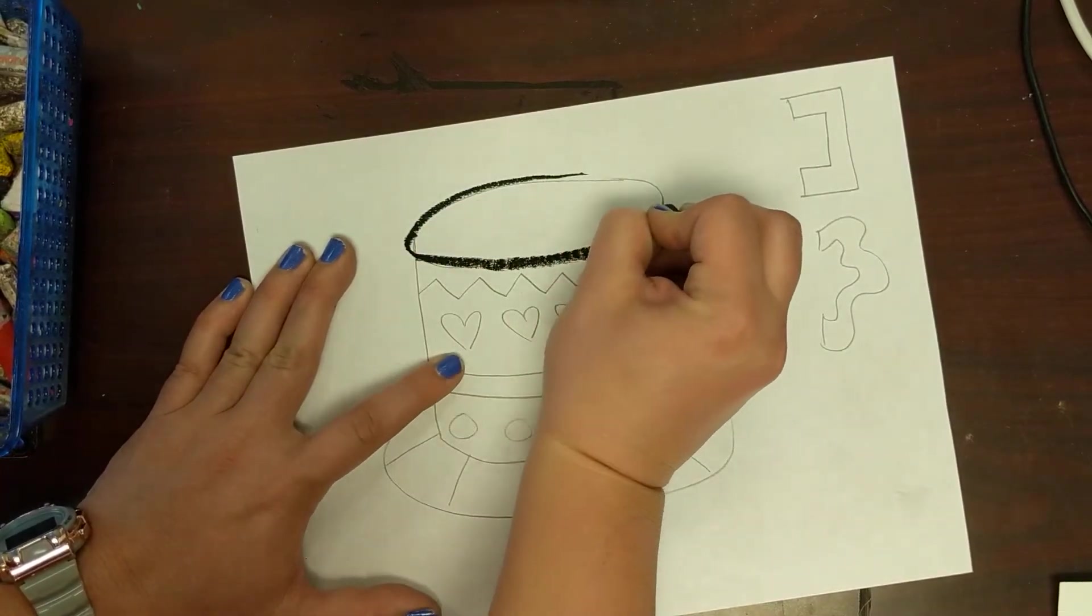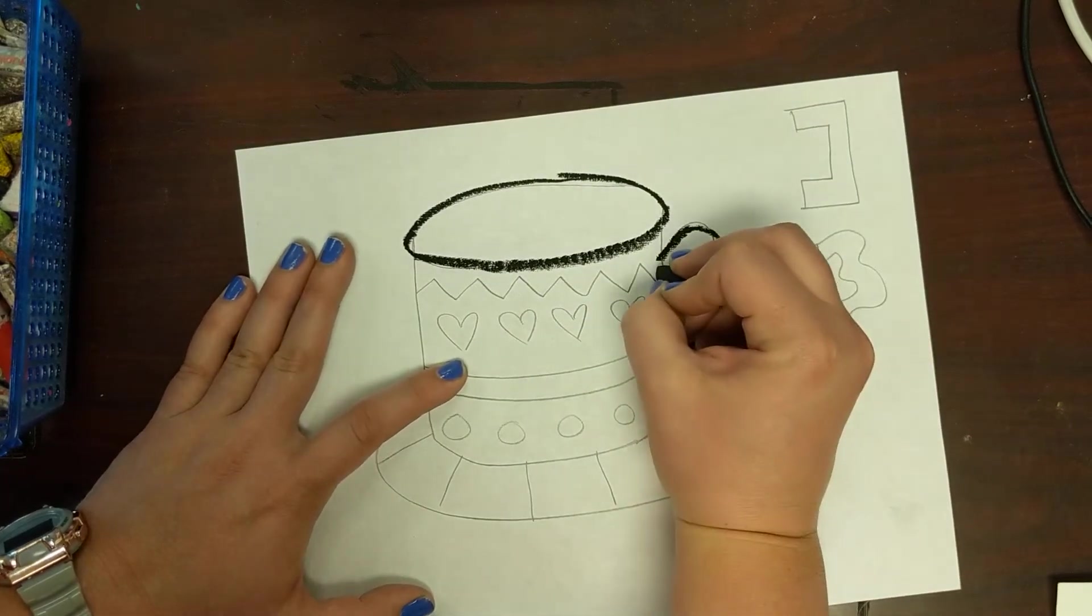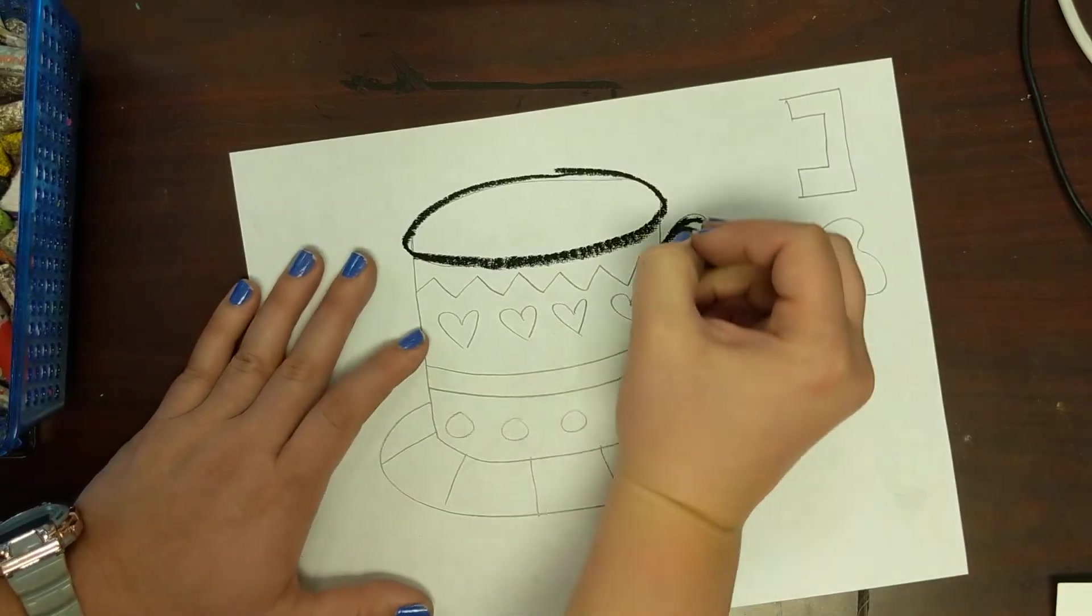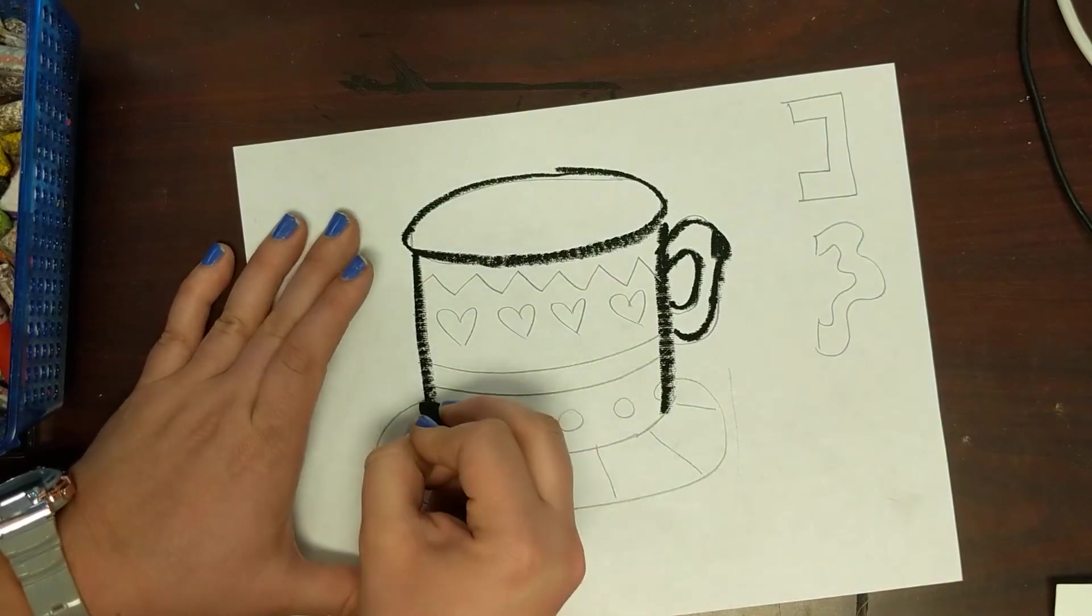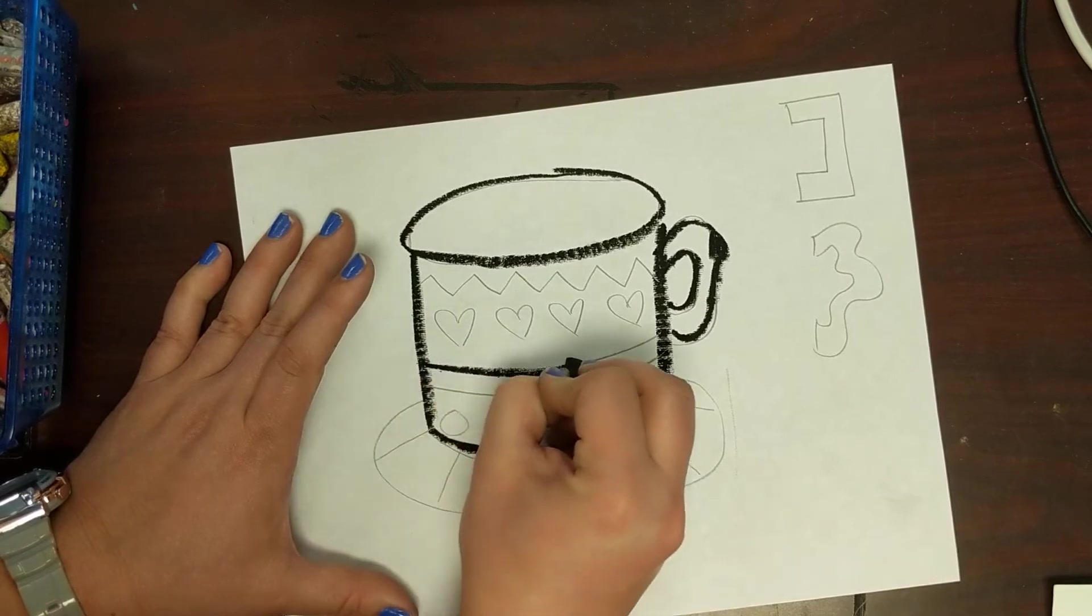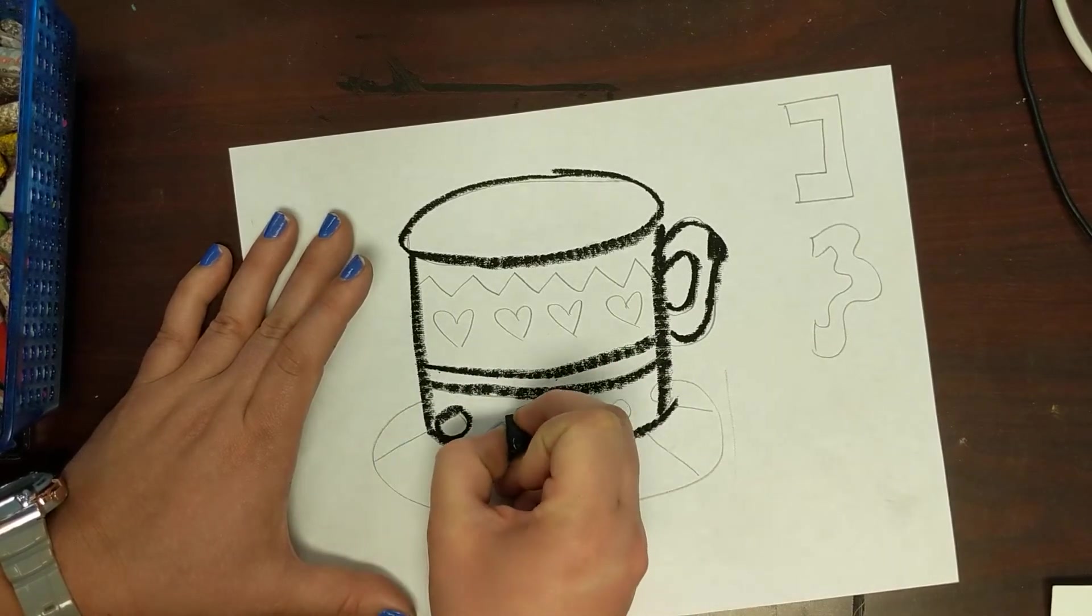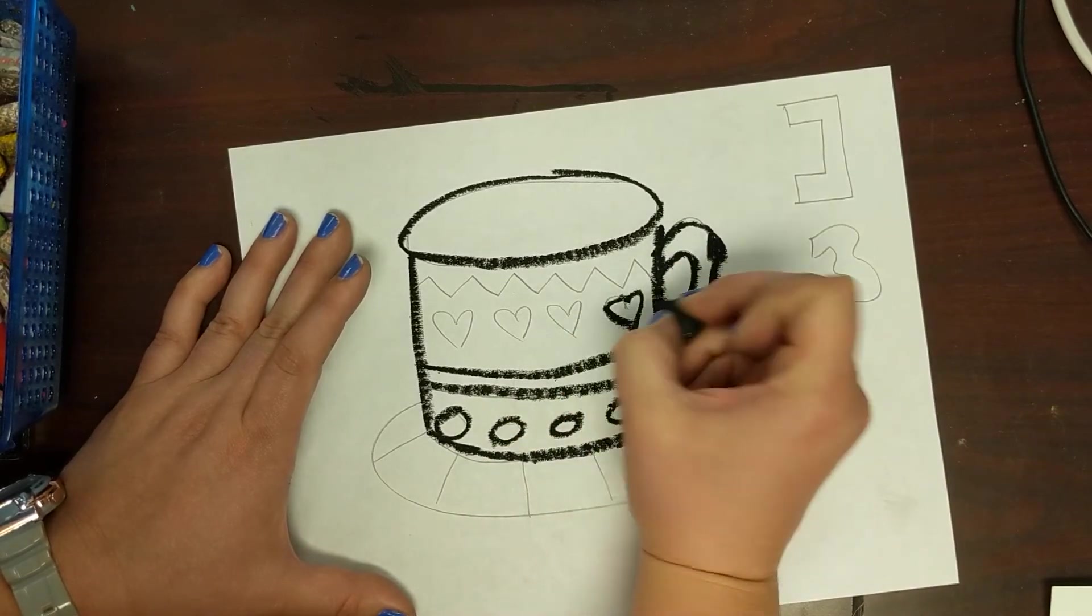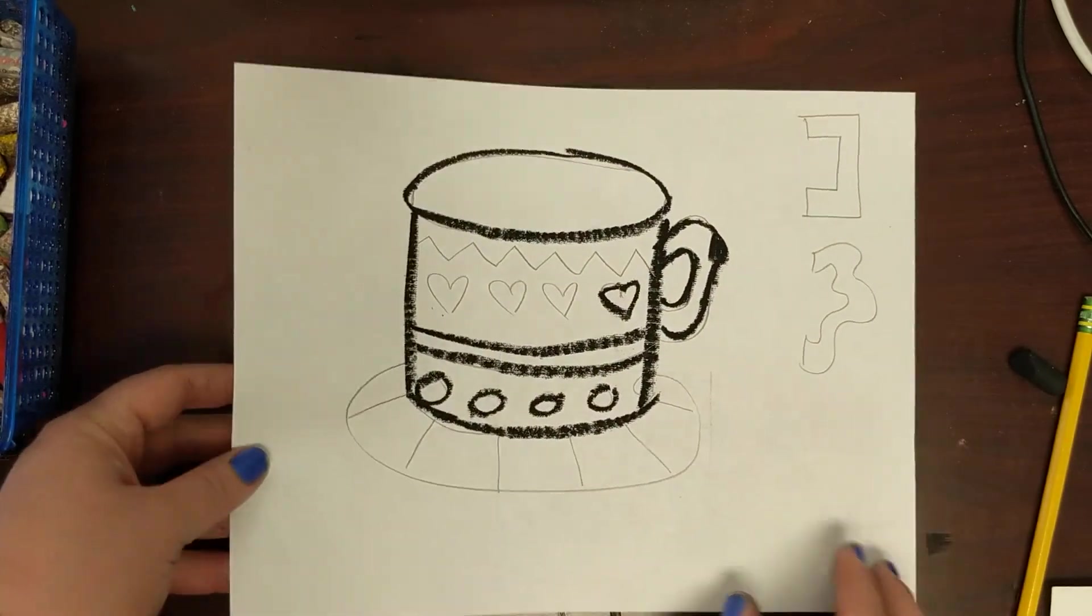So we're using oil pastel because we are gonna paint these. We are gonna paint our mugs and the oil pastel kind of acts as a resist. Remember, oil and water don't mix together, so the oil pastel will show through when you paint on top. It also kind of acts like a wall to hold in all of your paint colors. So I'm gonna keep going over all my pencil lines and then I can start painting.